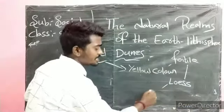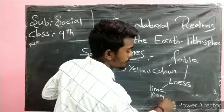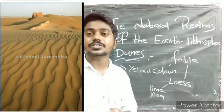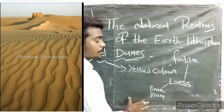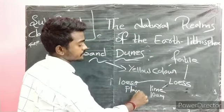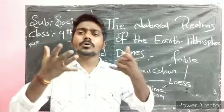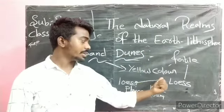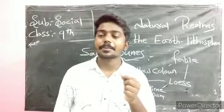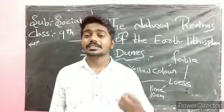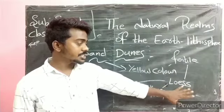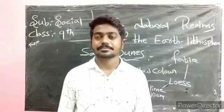This yellow fertile dust is called loess soil. Loess soil is very rich in lime and loam, and it drains water very fast. The plains formed due to the deposition of loess are called loess plains.